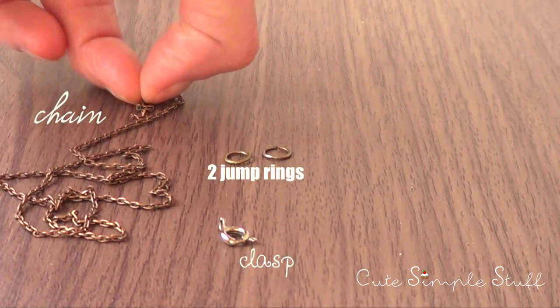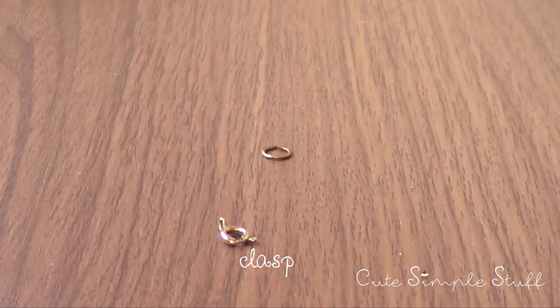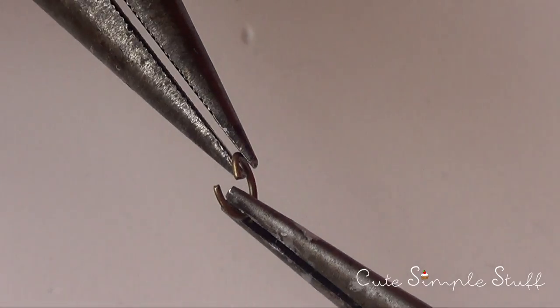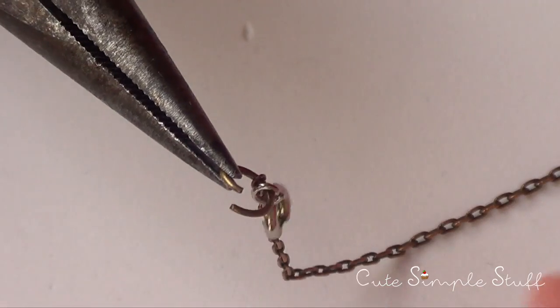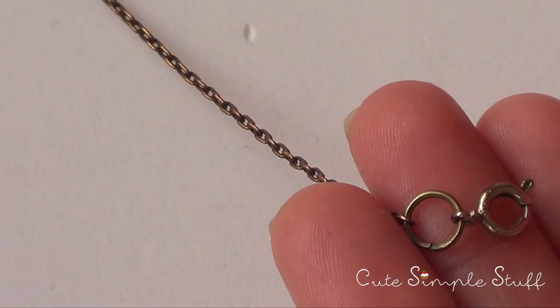And to finally make this thing a necklace we're just going to be needing a chain, one clasp and two jump rings. Then I'm just going to open my jump ring using two pliers. My chain goes in like that and then my clasp goes in as well, and then close the whole thing. So that is one side.